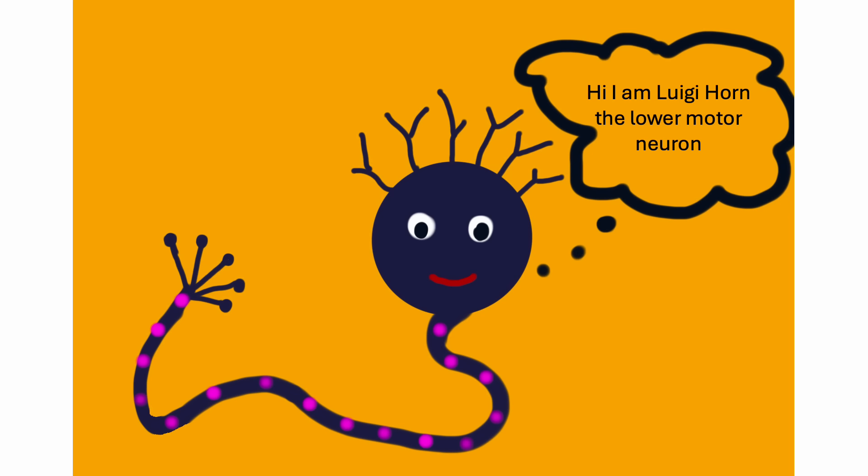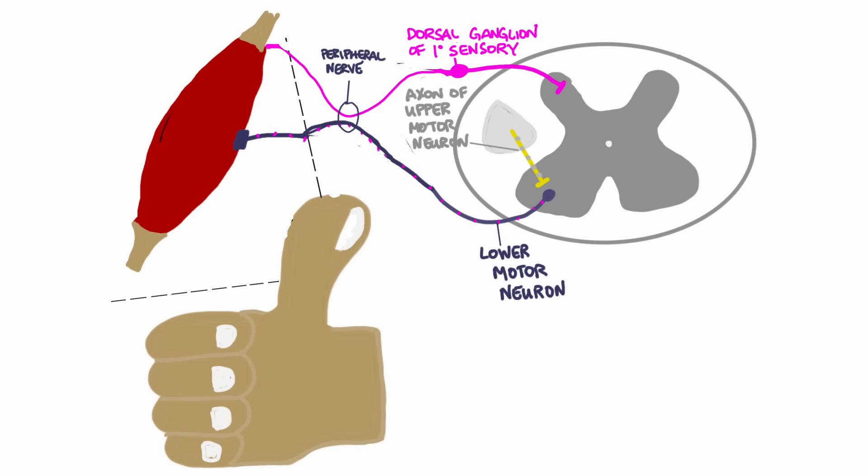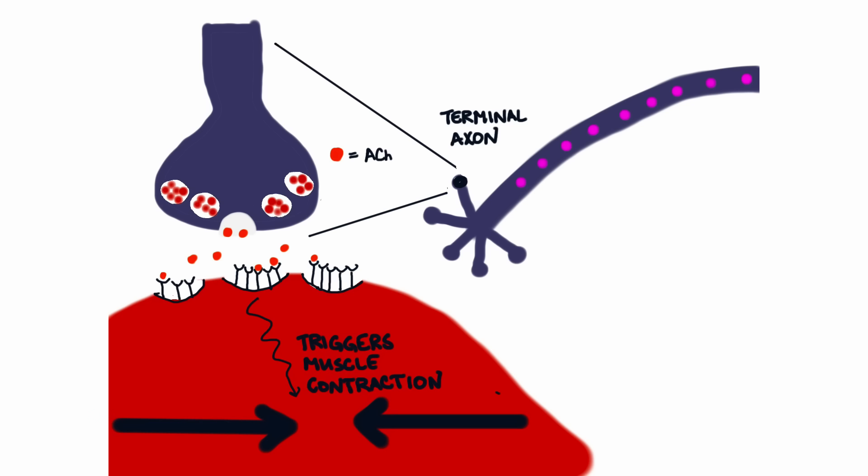Among other things, I connect the motor cortex to the muscles. I am also a key player in reflexes. I take the information coming from the brain and facilitate the contraction of muscles. I do this by releasing acetylcholine from my terminal axons into the neuromuscular junction. When the receptors on the muscle receive acetylcholine, this triggers the contraction of the muscle.